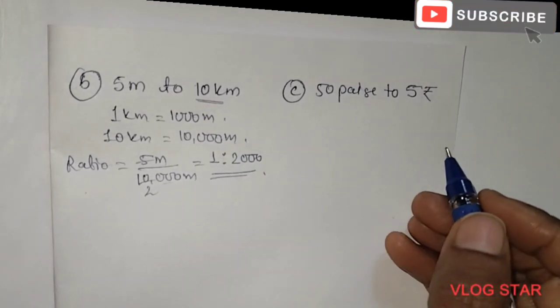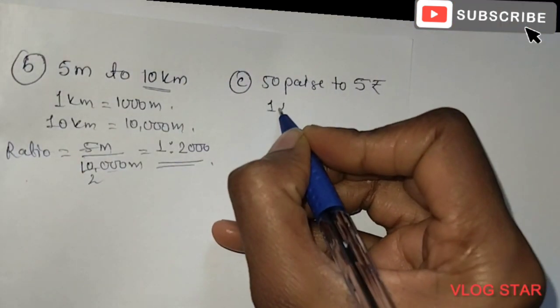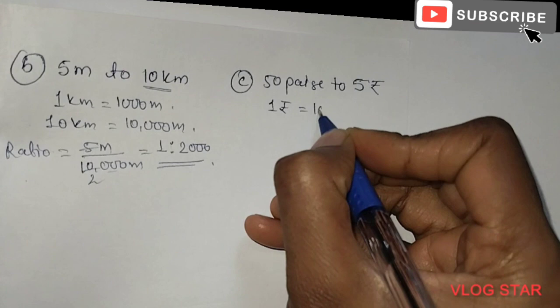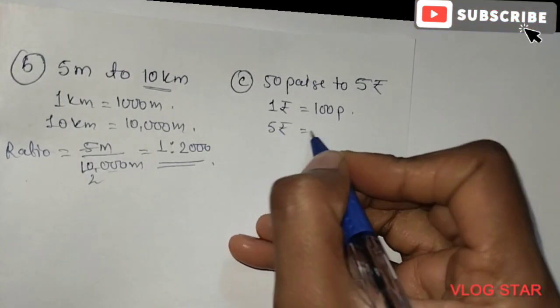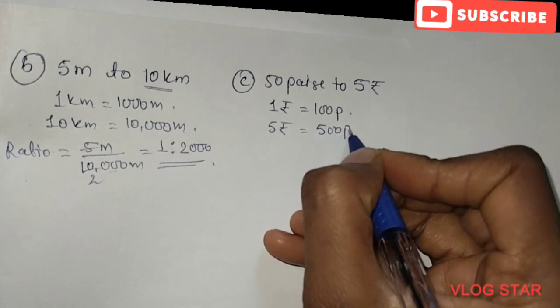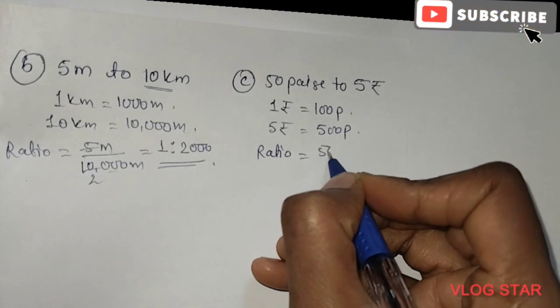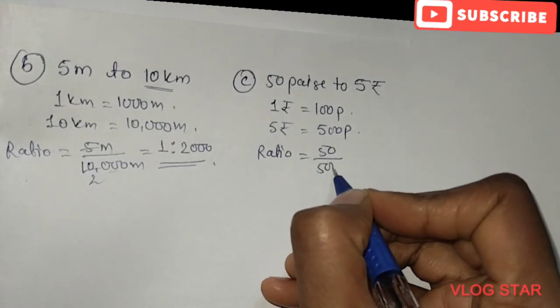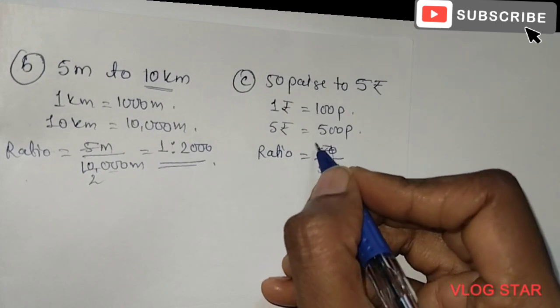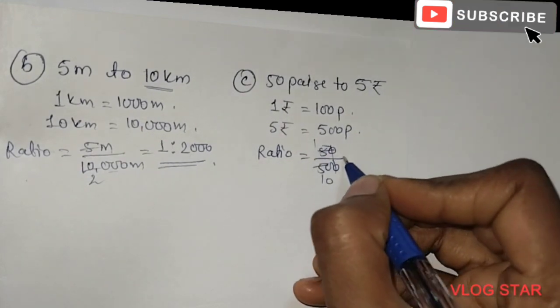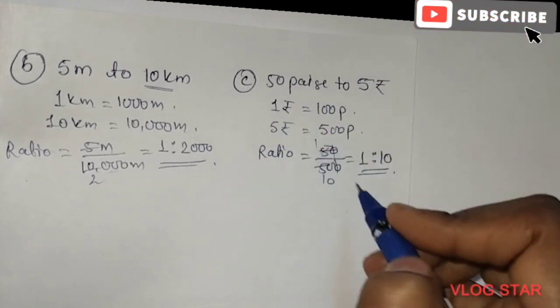Next question is 50 paise to 5 rupee. As we know, in 1 rupee there is 100 paise, so in 5 rupee we have 500 paise. Now we find the ratio. The ratio is 50 paise divided by 500 paise. When we cancel, we get 1 is to 10. This is our answer for the third question.